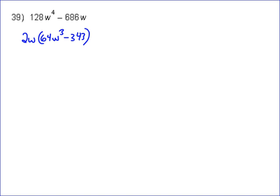Now I look inside and see if I can factor further — and I can, because it's a difference of two cubes. Remember, your only options for factoring a binomial are difference of two squares, difference of two cubes, or sum of two cubes. In this case, we have a difference of two cubes.